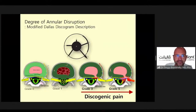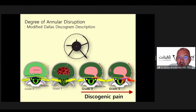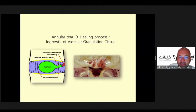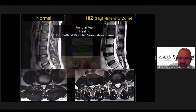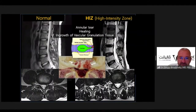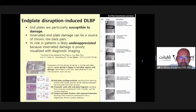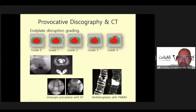We are discussing the Dallas discogram. Patients with grade three to five we operate on by annuloplasty. The pathomechanism is the annular tear and the healing process involving in-growth of vascular granulation tissue. You can see this hyper-intense zone and vascular granulation in the typical clinic patient — the nucleus slipping inside the spinal canal through the annular tear. This is our target for annuloplasty. The end plate plays a very important role. For grade five and six, we can approach by annuloplasty.